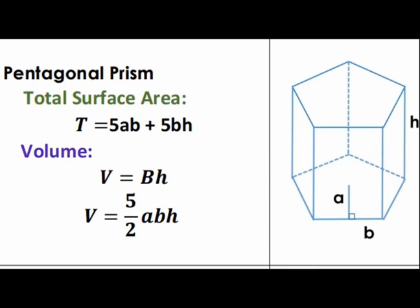For the volume, again it's area of the base times height. Being a pentagon, the area of the base is 5/2 times AB, and the height is H. Therefore, the volume is 5/2 times ABH.